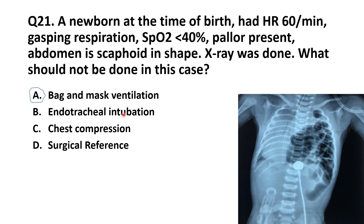All these other options are correct: heart rate of 60 means chest compression is indicated; ET tube intubation is done because of gasping respiration; and surgical referral will also be done for correction of congenital diaphragmatic hernia. Bag-mask ventilation is absolutely contraindicated, so that is the right answer for what should not be done.